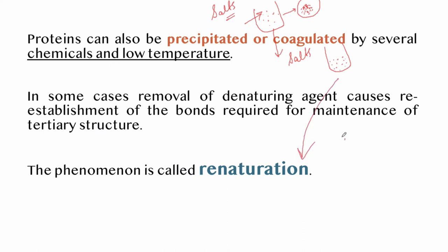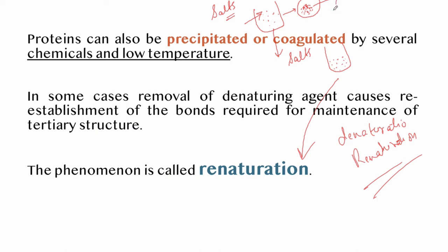So we have two phenomena in the case of proteins: denaturation, where the tertiary structure is lost and a coagulate is formed; and renaturation, where the denaturing agents are removed and the tertiary structure is reestablished.